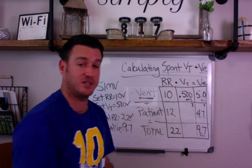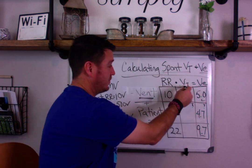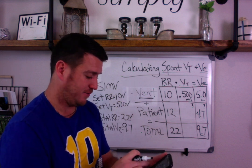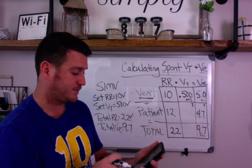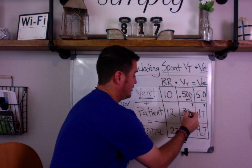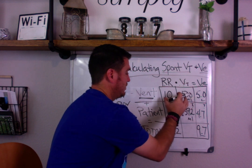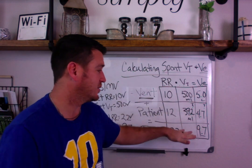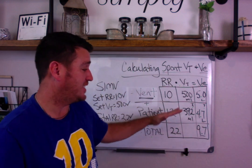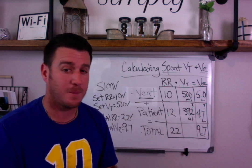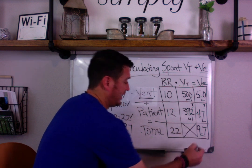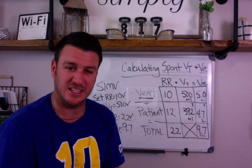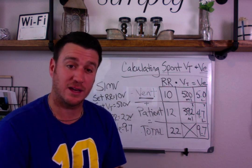To get spontaneous tidal volume: tidal volume equals minute ventilation divided by respiratory rate. So 4.7 divided by 12 gives approximately 392 mL — that's the patient's spontaneous tidal volume. One important note: do not add the patient's tidal volume to the machine's tidal volume. That last box gets a big X — there is no total tidal volume, because tidal volume is one breath and it makes no sense to add them together.